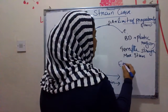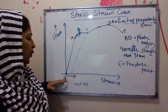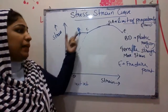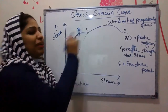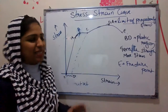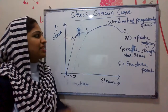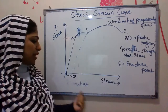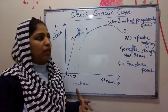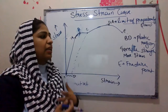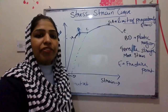Point E is called the Fracture Point — this is where the material breaks. To summarize: O to A is the region of proportionality (Limit of Proportionality at A); O to B is the elastic region (Elastic Limit at B); B to D is the plastic region; D is the point of Maximum Stress or Tensile Strength; and E is the Fracture Point.